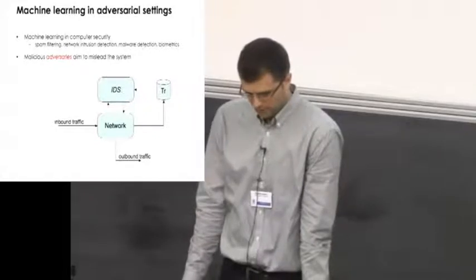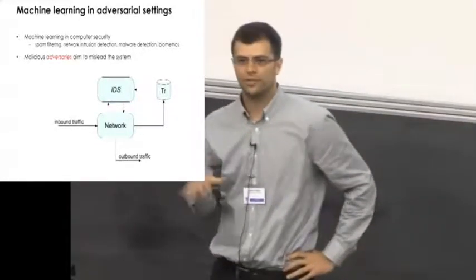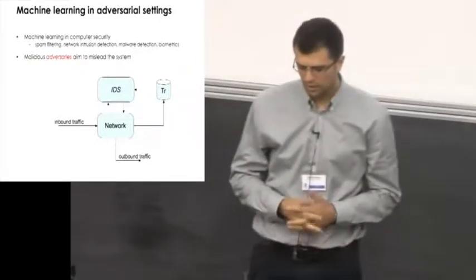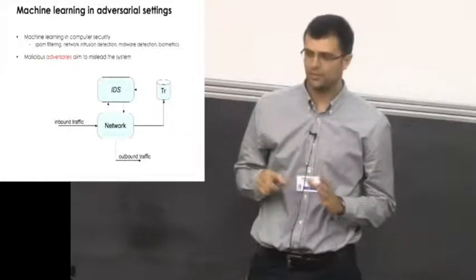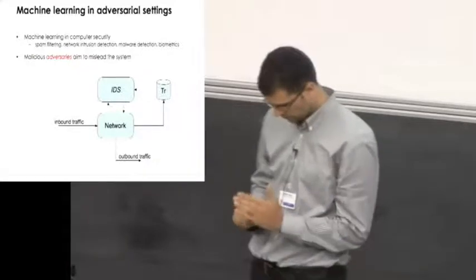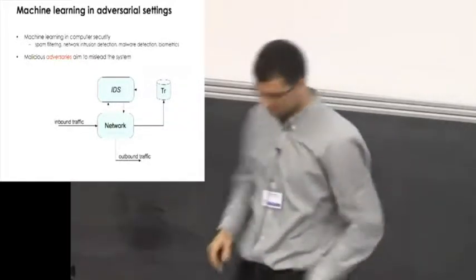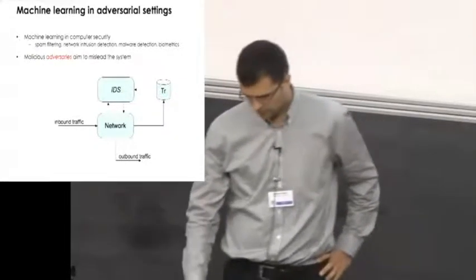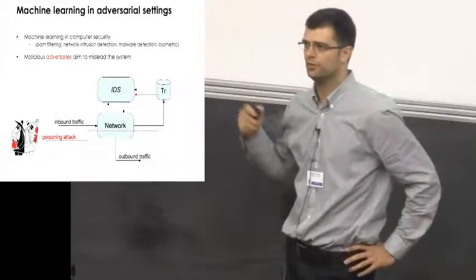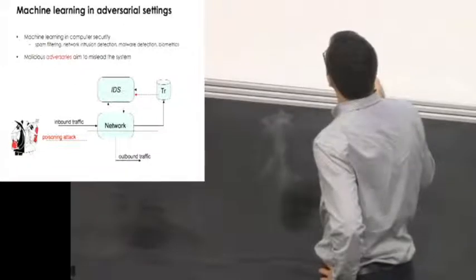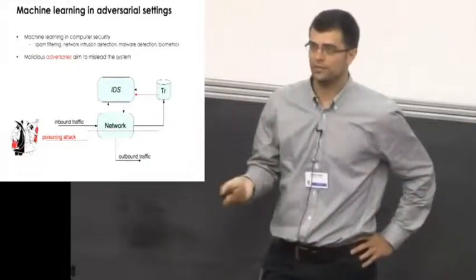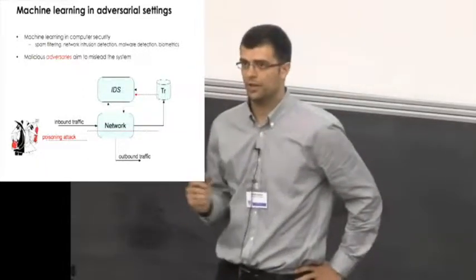For instance, consider the case depicted here in the slide, where we have an intrusion detection system monitoring some network traffic. This IDS has the ability of blocking some suspicious network packets flowing on the network traffic, and let's assume also that this system can be retrained on some data which can be collected from the network in an unsupervised fashion. What can happen is that an adversary may design some specific network traffic that will be further used to train the intrusion detection system, with the goal of forcing this system to block some legitimate requests to the network, basically forcing the IDS to cause a denial-of-service attack. This is what we call a poisoning attack to a learning algorithm.